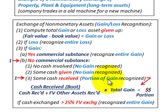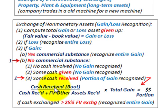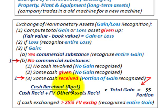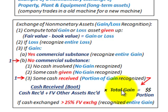Because cash is received, a portion of the gain has to be recognized. That's based on our equation where you have the cash received — commonly referred to as the boot — divided by the sum of the cash received plus the fair value of the other assets received. That fractional amount is then multiplied by the total gain to determine the portion of the gain that has to be recognized.